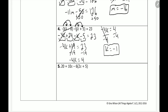Let's take a look at number 5. We have 20 is equal to 10x minus 6 times the quantity 2x plus 5. We have to distribute this negative 6: negative 6 times 2x is negative 12x, and negative 6 times 5 is negative 30. Now we combine like terms — 10x minus 12x is negative 2x. Negative 30 is by itself. So we have 20 is equal to negative 2x minus 30.